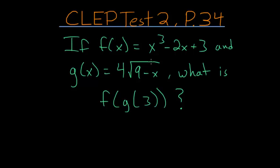If f(x) equals x cubed minus 2x plus 3, and g(x) equals 4 times the square root of 9 minus x, then what is f of g of 3?